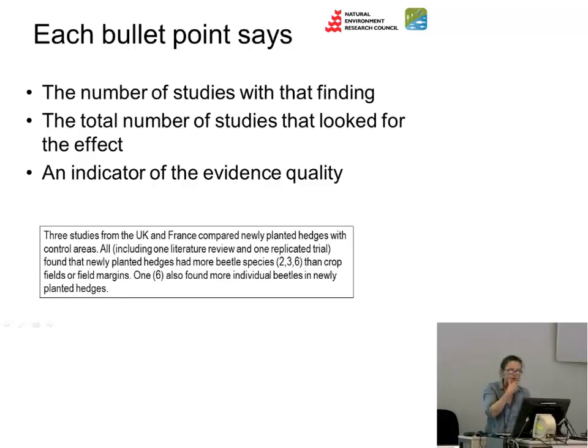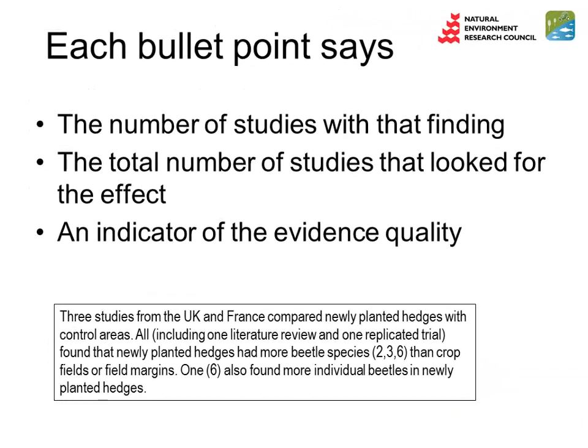Here's an example of what a key message should look like: this one is about planting hedges for wildlife on farmland. 'Three studies from the UK and France compared newly planted hedges with control areas' — there you have the total number of studies and what they've been doing. 'All, including one literature review and one replicated trial, found that newly planted hedges had more beetle species than crop fields or field margins. One also found more individual beetles in newly planted hedges.' Key messages are almost never perfect and you can't always follow all the guidelines, but this illustrates the structure well.